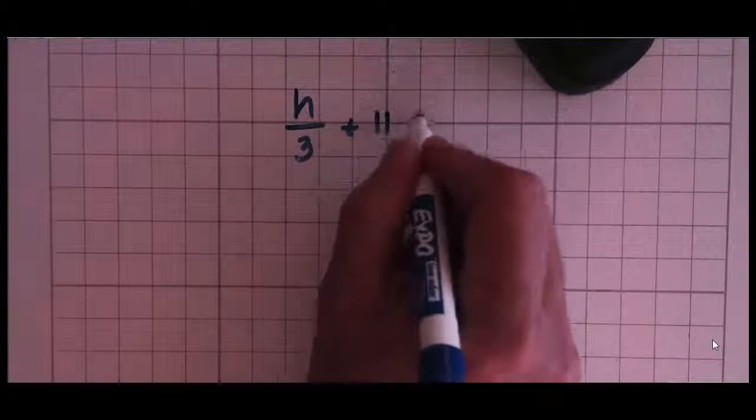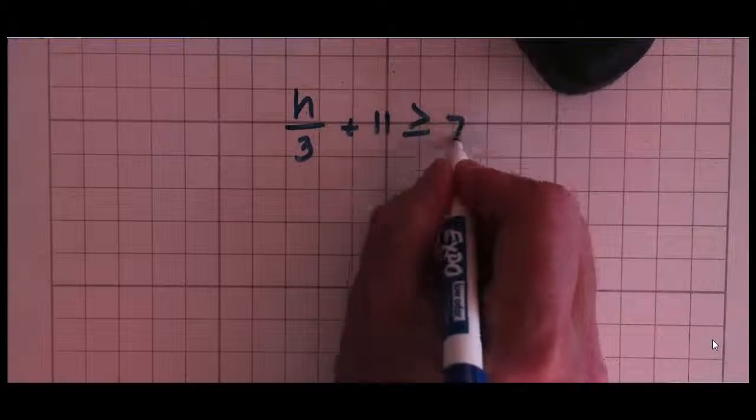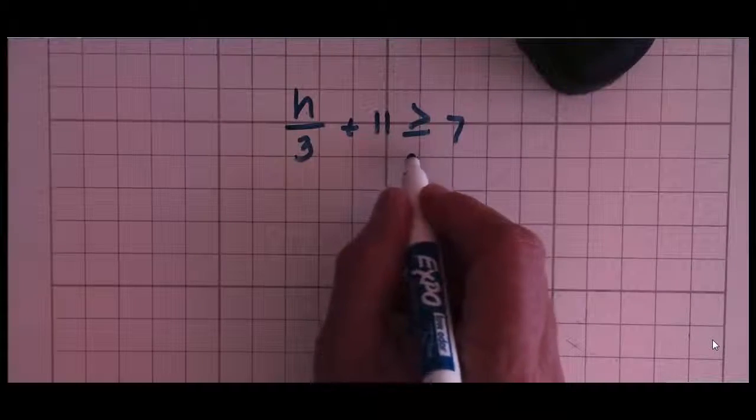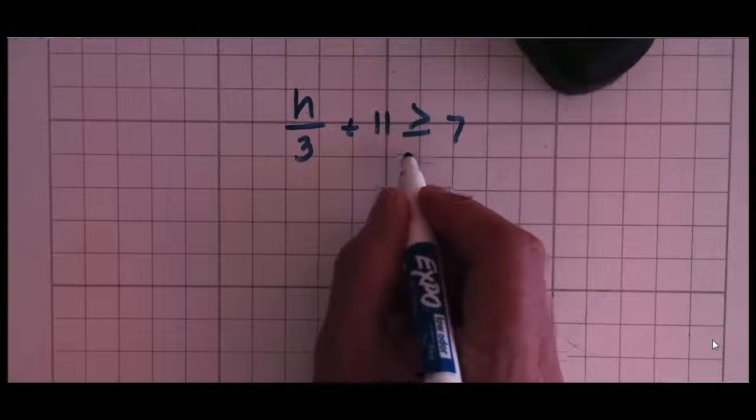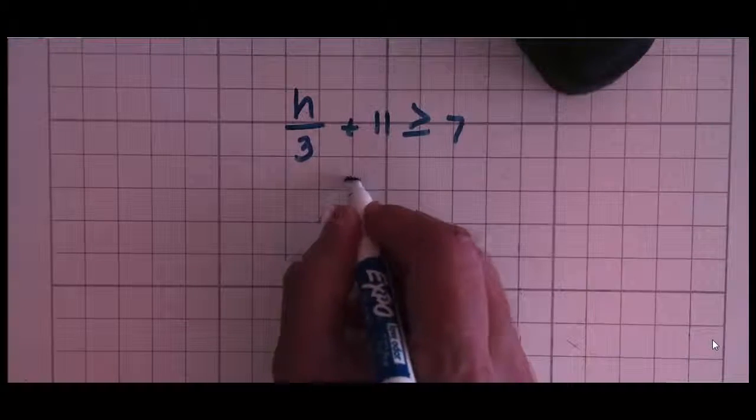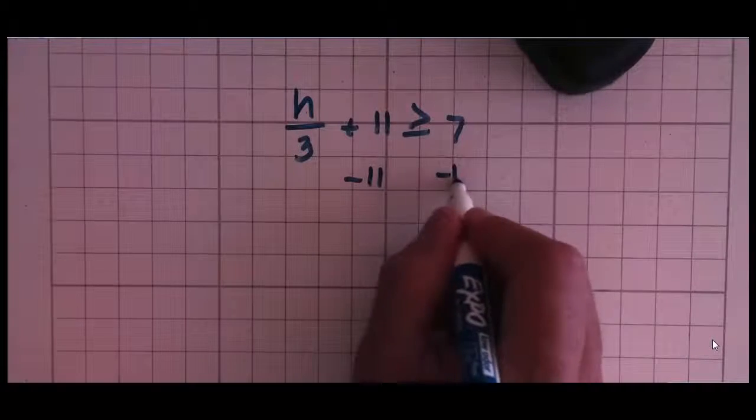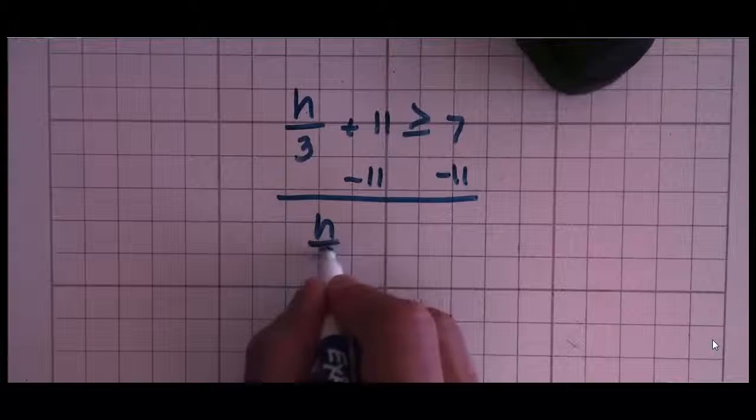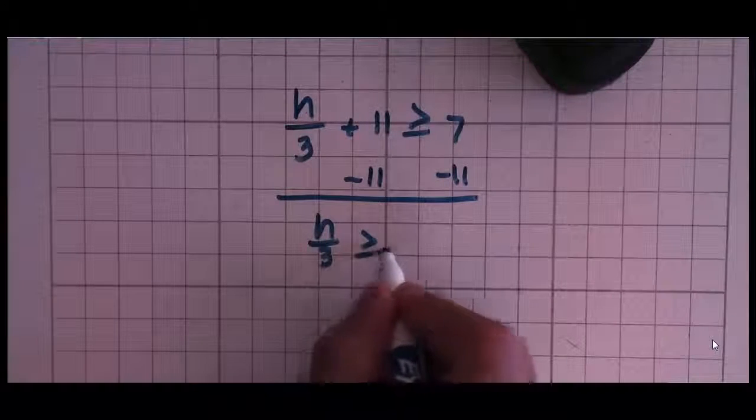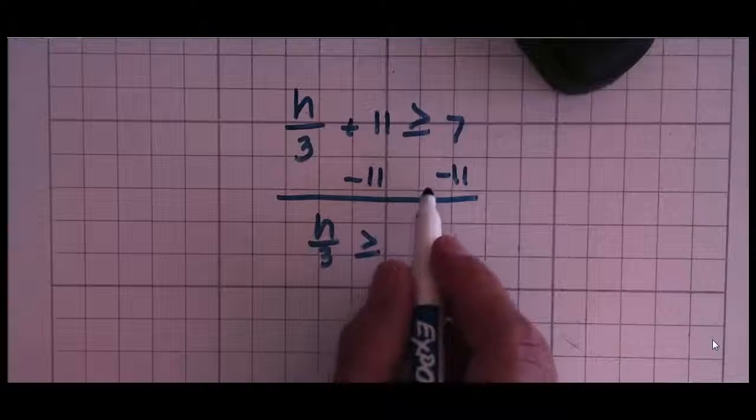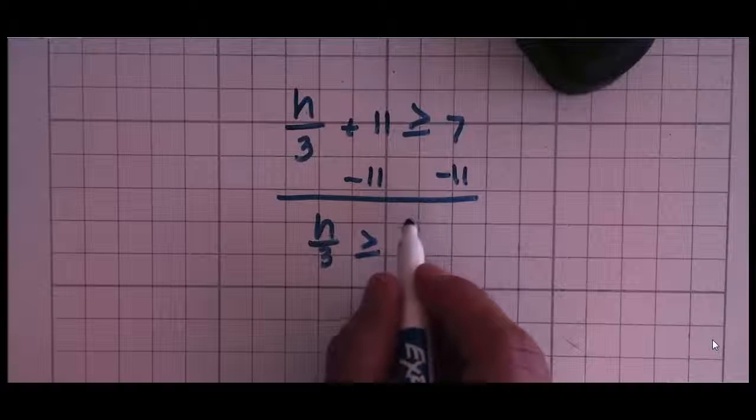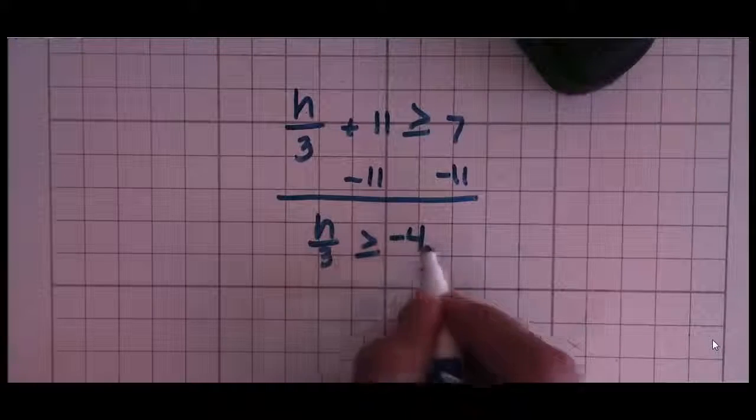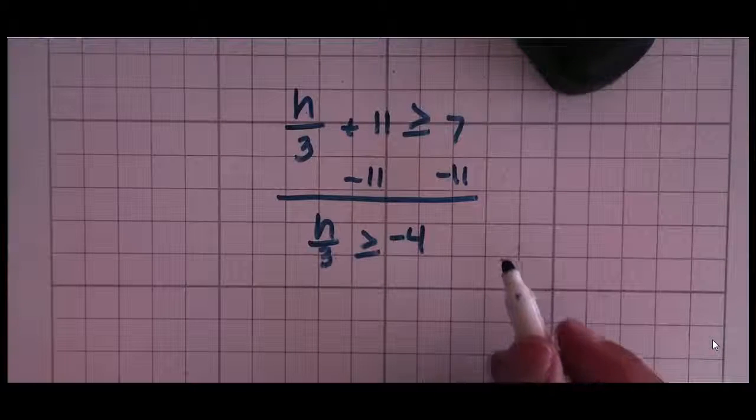h over 3 plus 11 is greater than or equal to 7. Again, I'm going to pretend in my mind, and I'll write it down if I have to, that this is an equal sign. If that was an equal sign, I know that I need to subtract 11 from both sides. And I get h over 3 is greater than or equal to 7 minus 11, opposite sign, so I subtract and keep the sign of the bigger number.